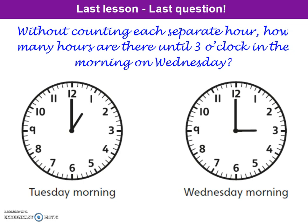So this is our first question. Without counting each separate hour, how many hours are there until 3 o'clock in the morning on Wednesday? Looking at the first clock, it shows us a time and tells us that time is Tuesday morning. Then we're shown our second clock, which we now know is 3 o'clock in the morning on Wednesday. So without counting all the individual hours, how many hours separate the time on Tuesday morning and 3 o'clock in the morning on Wednesday?